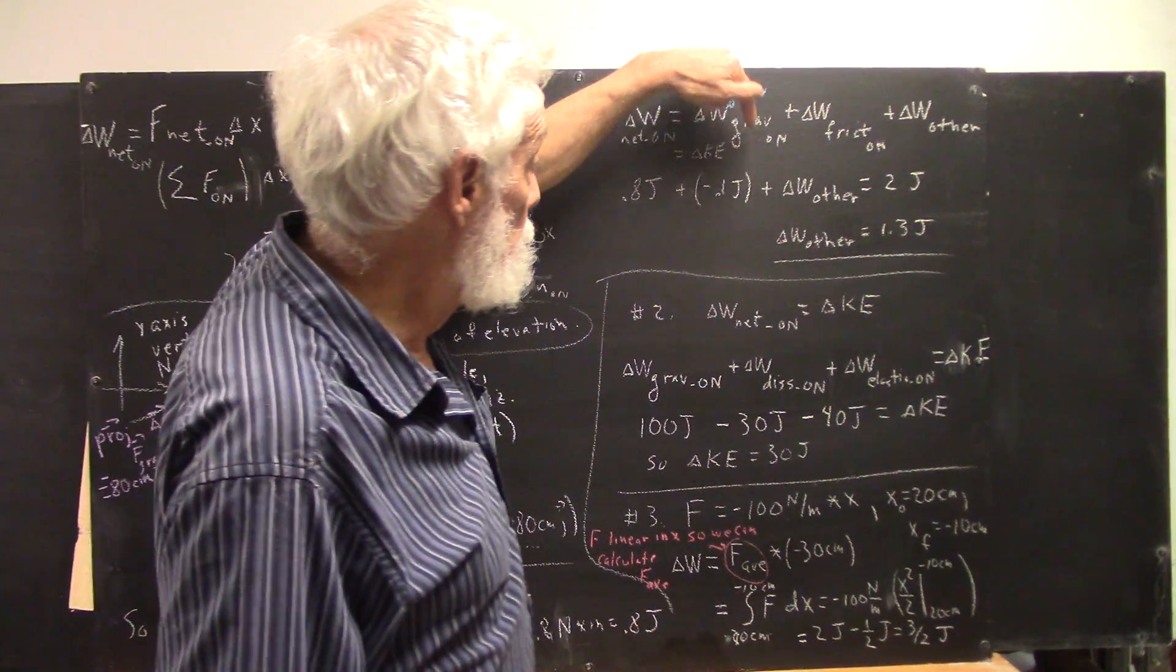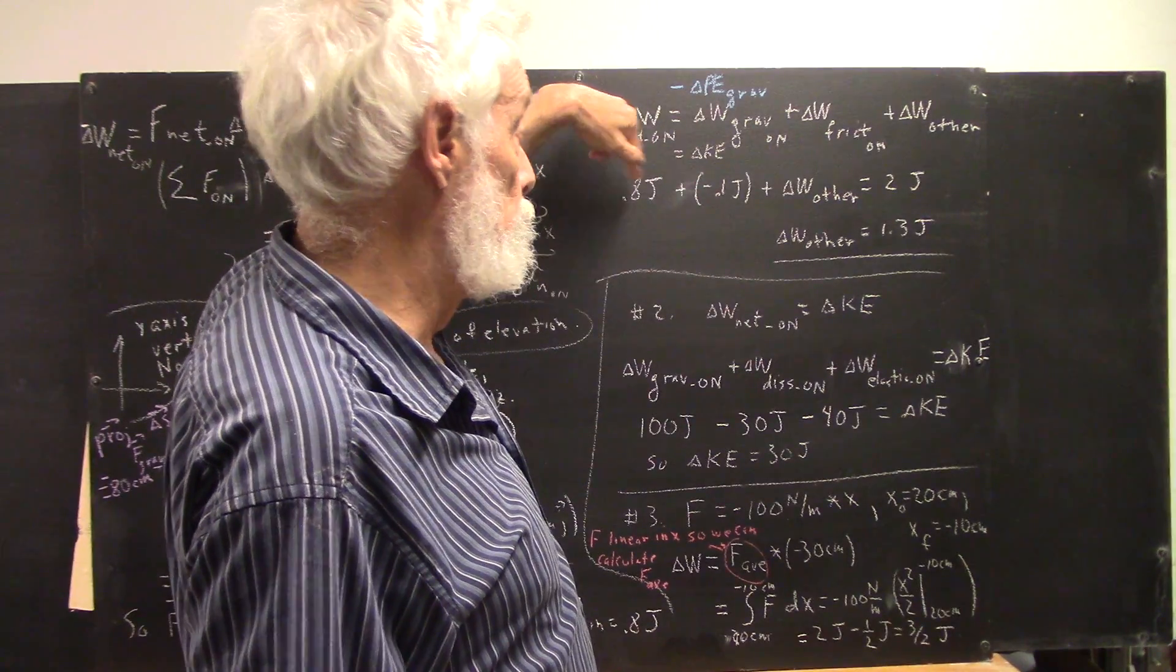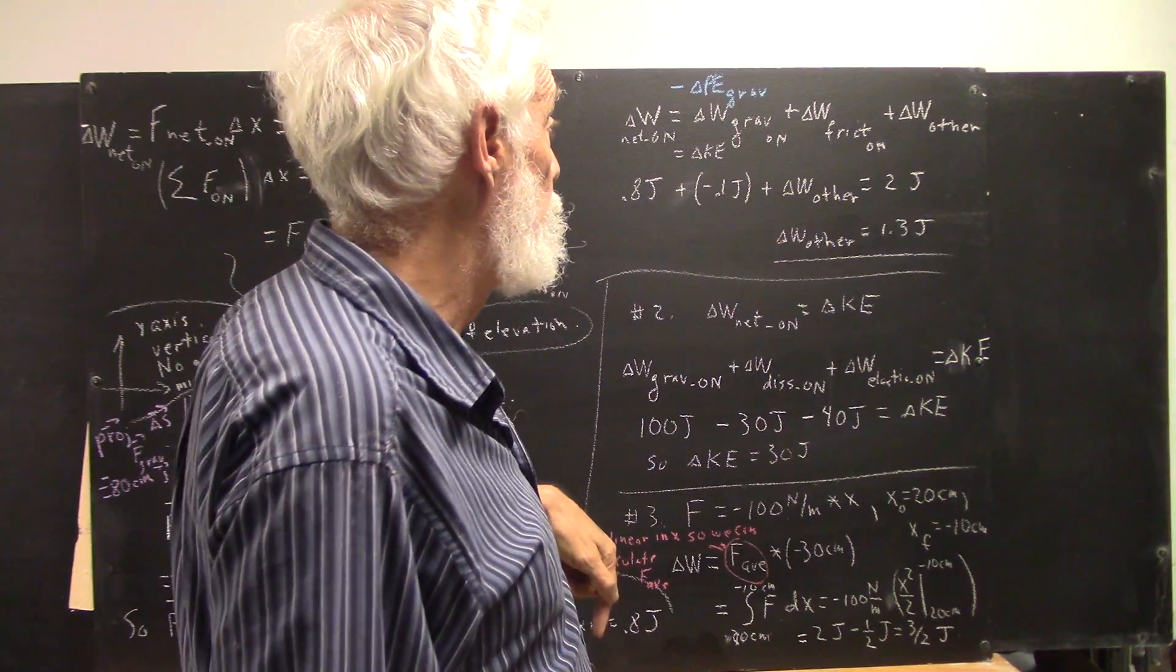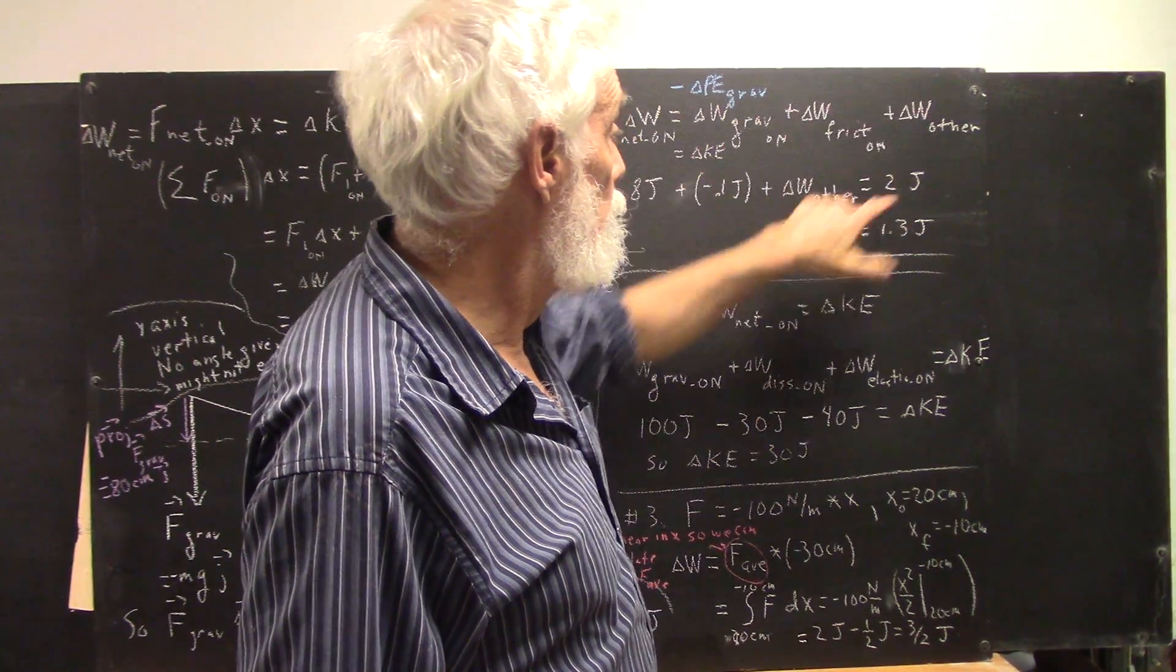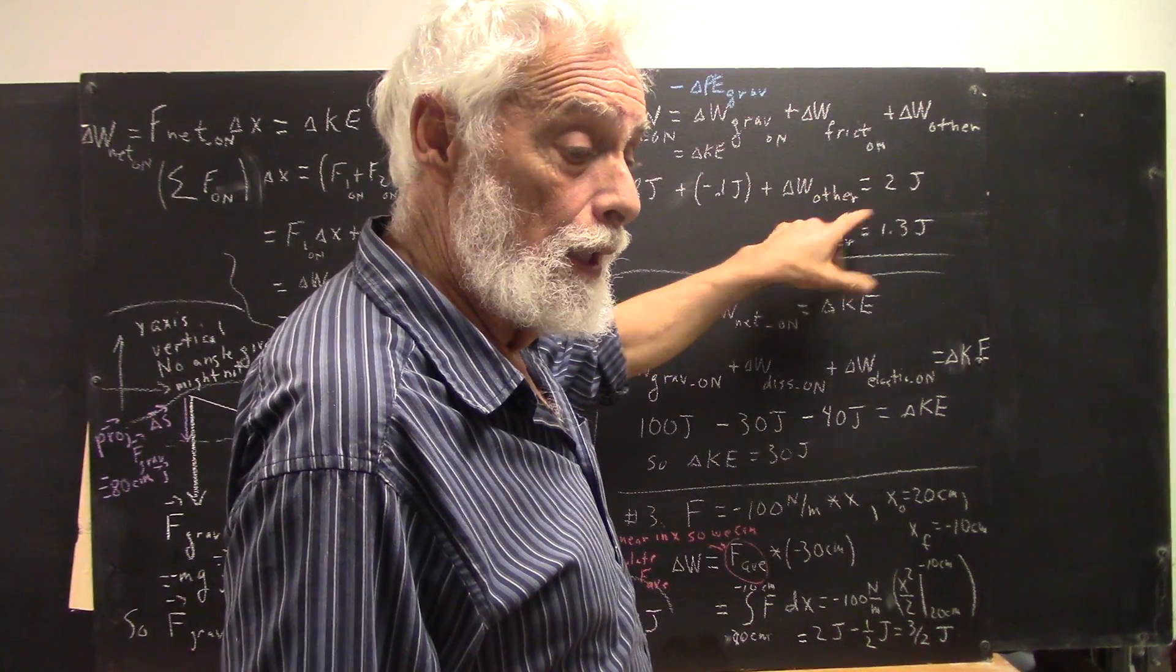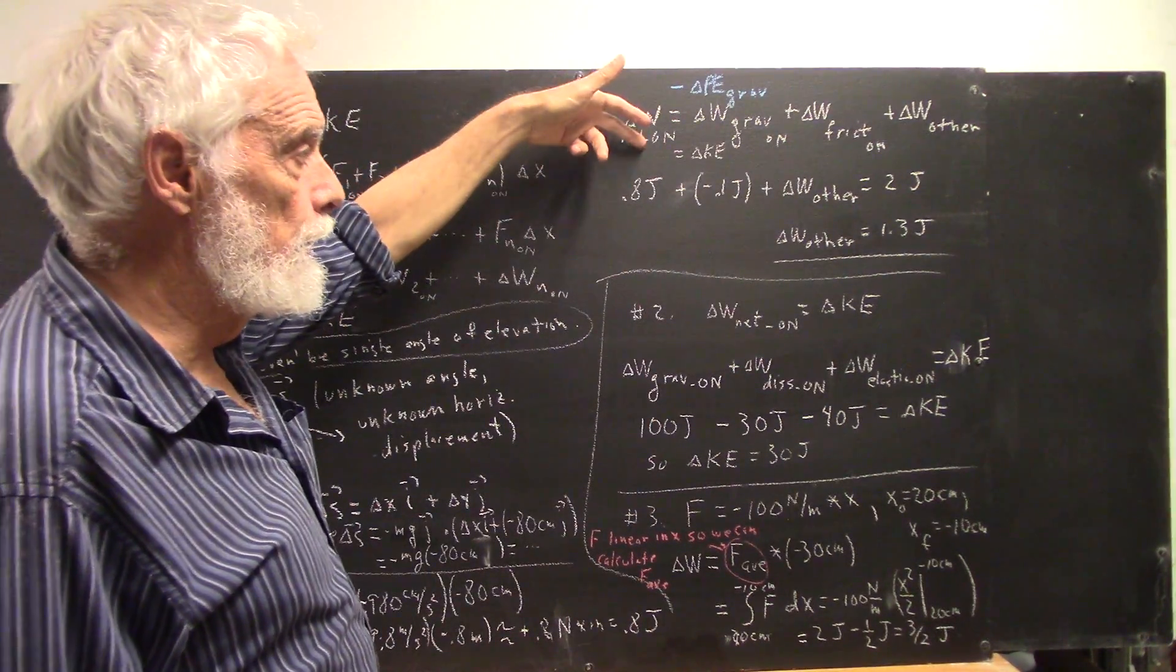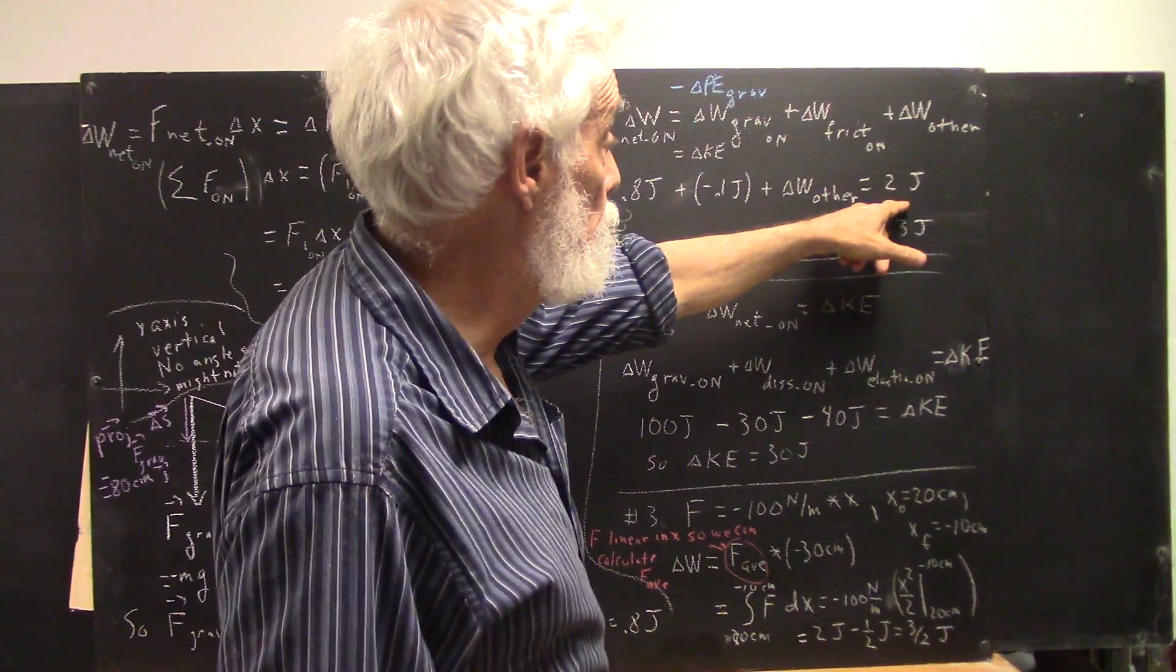We have the work done by gravity on the system, 0.8 joules. Work done by friction on the system, negative 0.1 joule. And work done by others. I also tell you that the change in kinetic energy of the system is 2 joules.